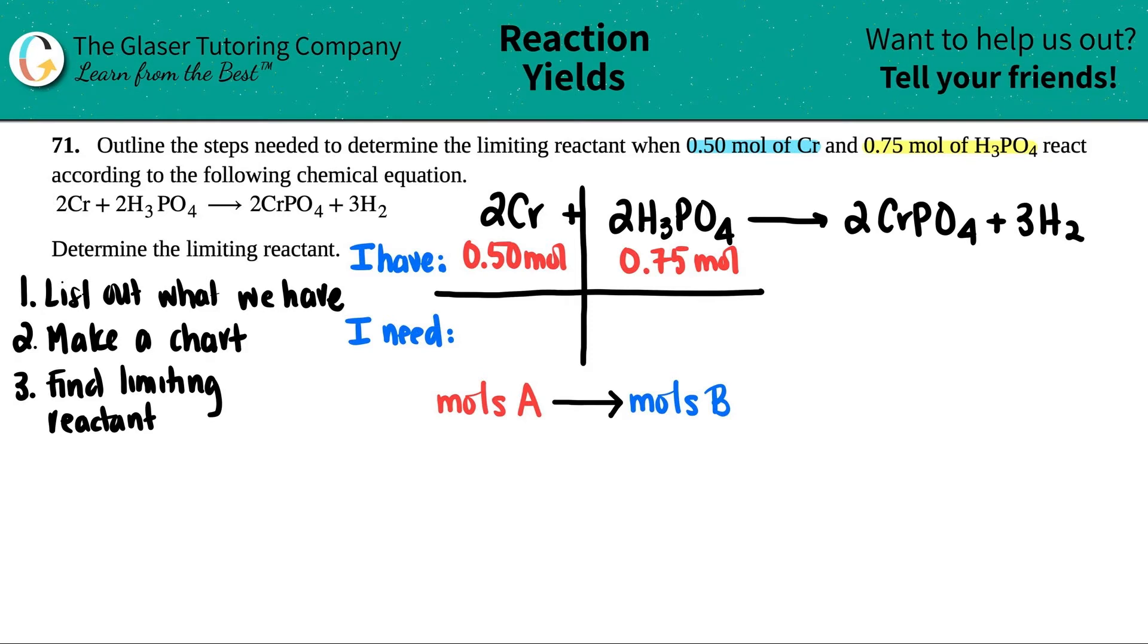Now, whenever we're going to be doing this, what you're going to say is you're going to say, okay, you either start with the 0.5 moles of the chromium, or you're going to start with the 0.75 moles of the phosphoric acid. I don't care which one you start with, but whichever one you start with, you're always going to be finding for the other compound. So if you choose 0.5 moles of chromium, you're going to be solving for how much you need of the phosphoric acid. And if you start with the 0.75 moles of the H3PO4, you're going to solve for how much you need of the chromium.